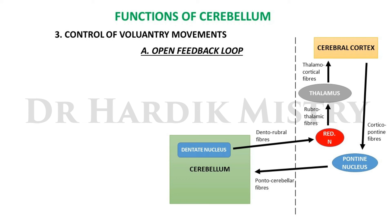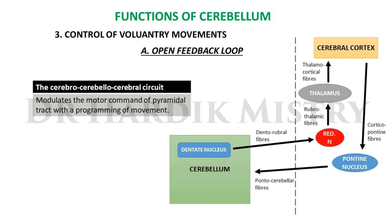Efferents go to the cerebrum via the dentorubrothalamic-cortical tract, which consists of dentorubral fibers from the dentate nucleus passing via the superior cerebellar peduncle to the red nucleus on the opposite side, rubrothalamic fibers from the red nucleus to the thalamus, and thalamocortical fibers from the thalamus to motor cortex areas 4 and 6.